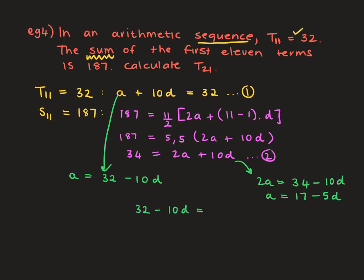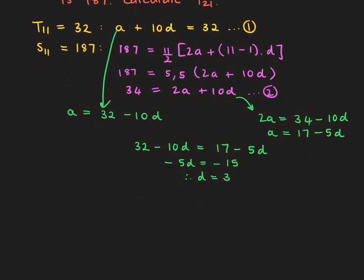Letting the two equations equal each other: 32 minus 10D equals 17 minus 5D, so negative 5D equals negative 15. The constant difference is 3. Now solving for A: A equals 32 minus 10 times 3, which is 32 minus 30, so A equals 2. The pattern starts: 2, then 2 plus 3 equals 5, then 5 plus 3 equals 8.